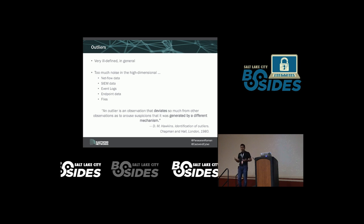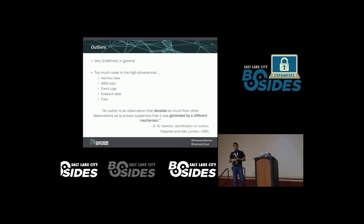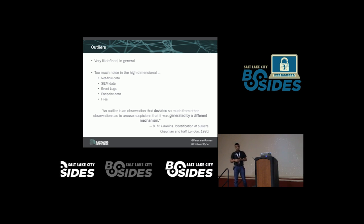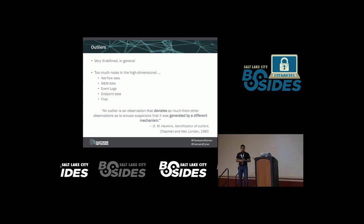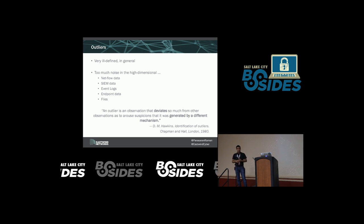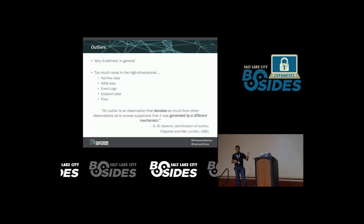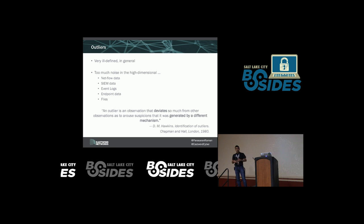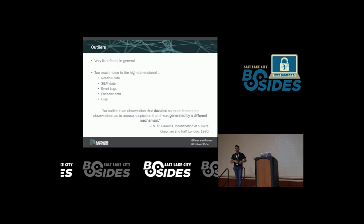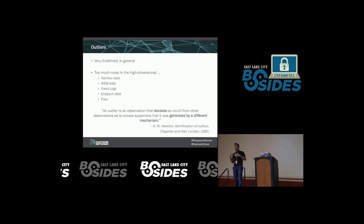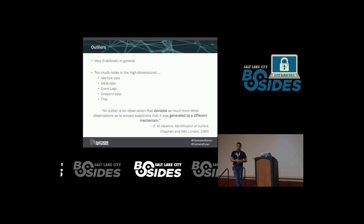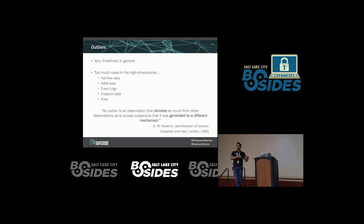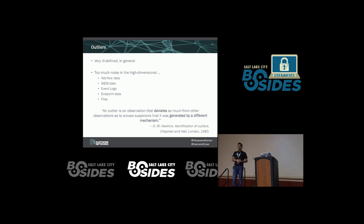One of the more acceptable definitions I have found comes from Hawkins, way back in the 80s. The definition goes: an outlier is an observation that deviates so much from other data that it almost feels like it was generated by a different mechanism.